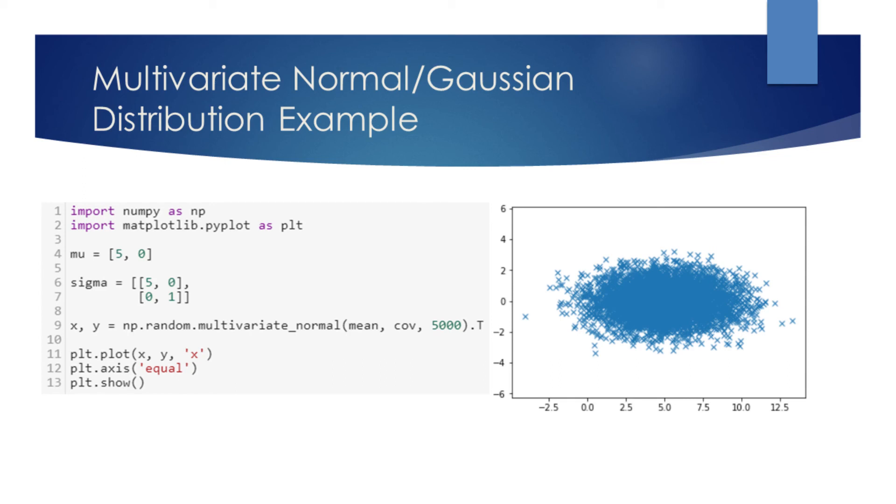This is because we specified in the covariance matrix to have the variance for the first element 5, and unit variance for the second element.